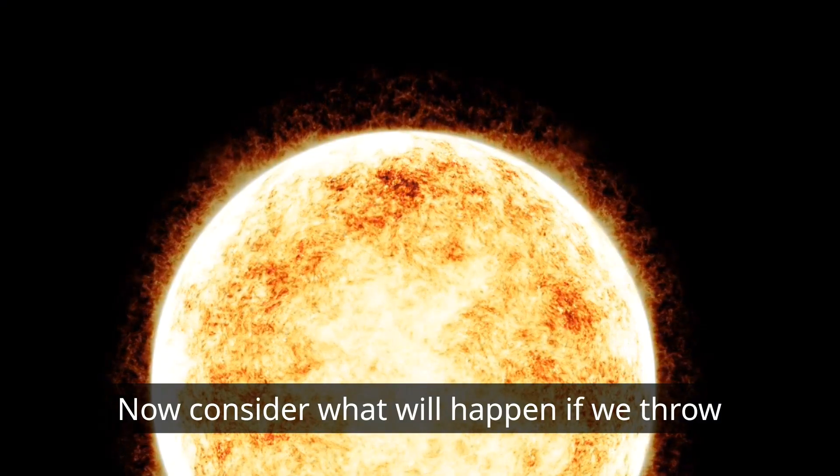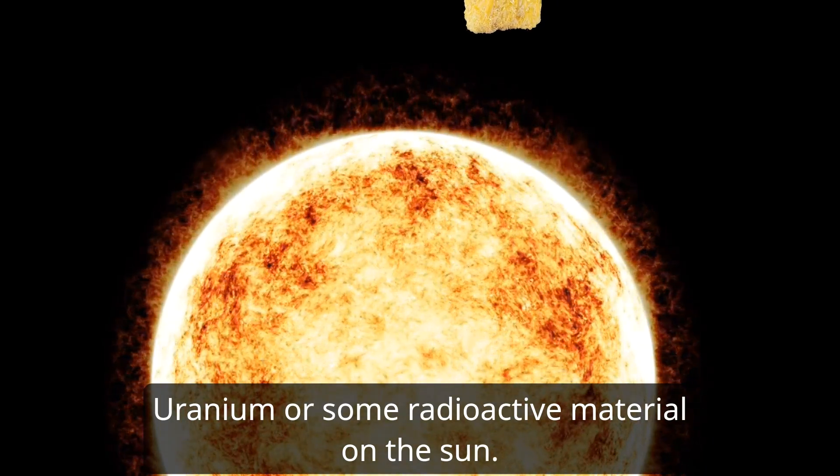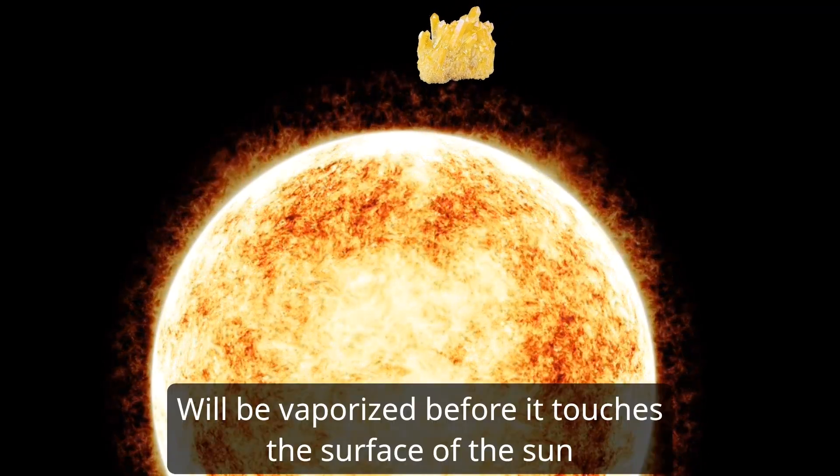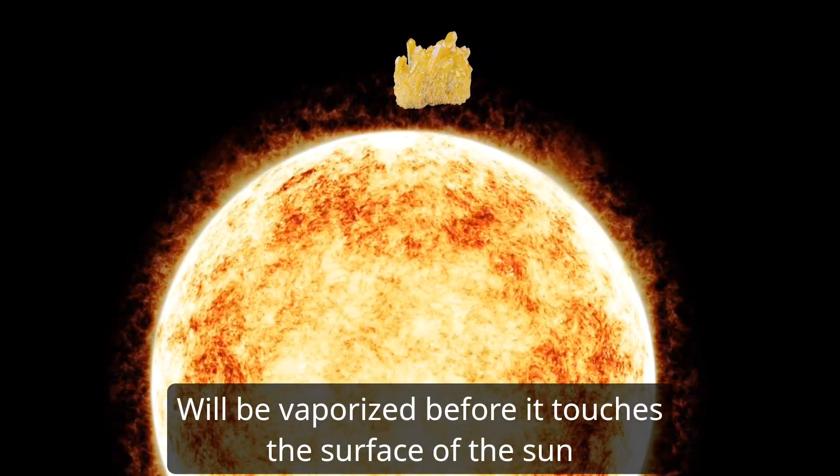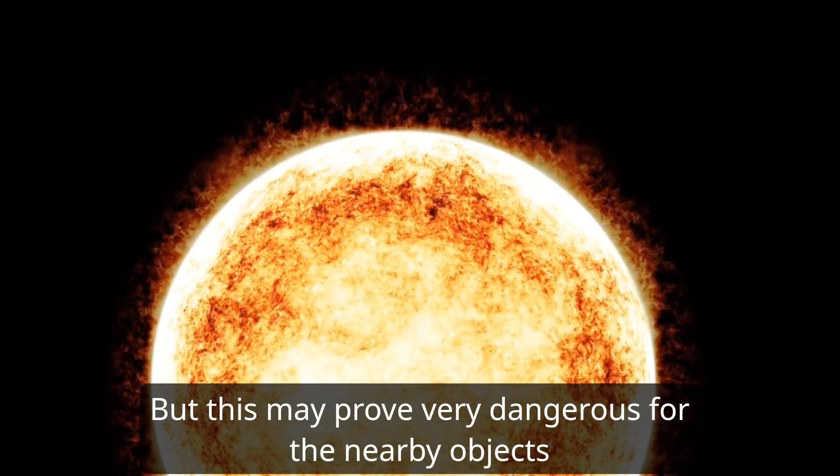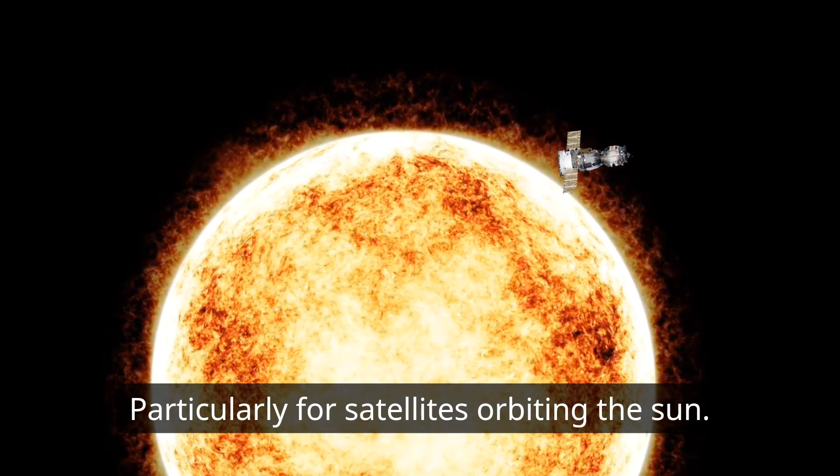Now consider what will happen if we throw uranium or some radioactive material on the sun. It is most probable that this material will be vaporized before it touches the surface of the sun, but this may prove very dangerous for nearby objects, particularly for satellites orbiting the sun.